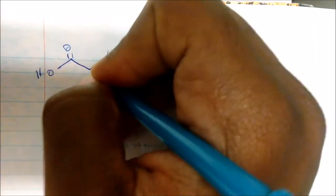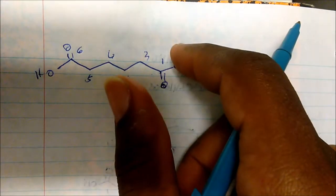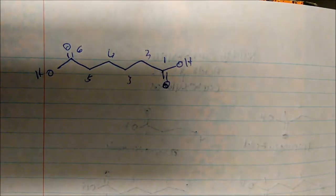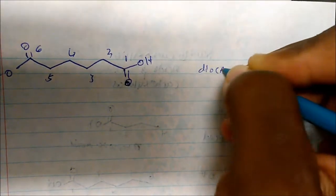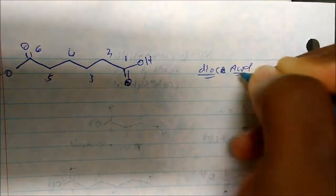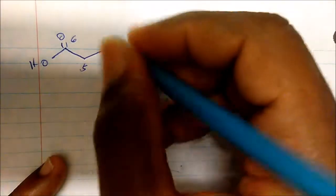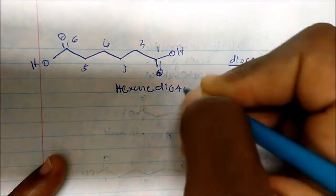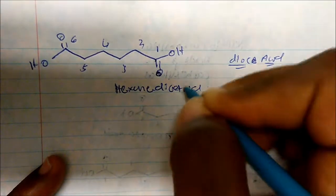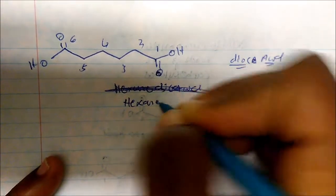Let's talk about dicarboxylic acids. If I wanted to name this compound, we have two carboxylic acids in the same chain — carbons 1, 2, 3, 4, 5, 6. If this were just one carboxylic acid chain we'd say hexanoic acid, but because there are two, we represent the ending with '-dioic acid'. So this is hexanedioic acid.